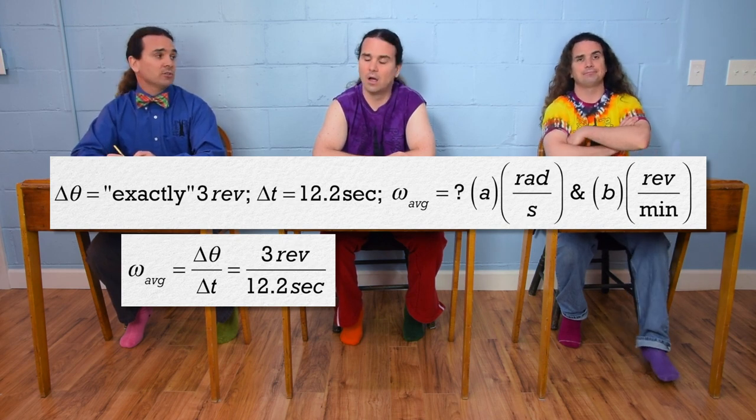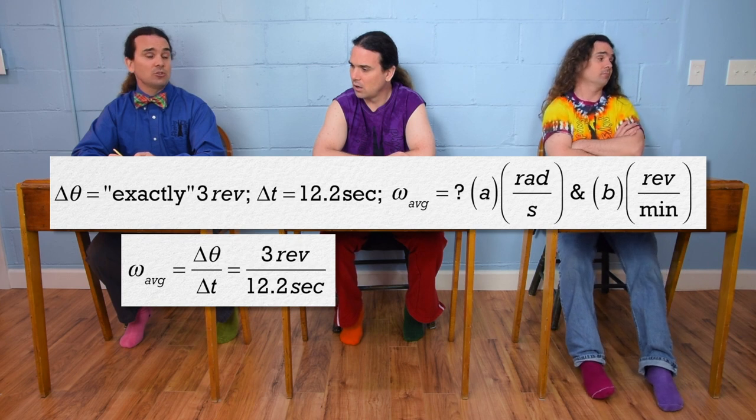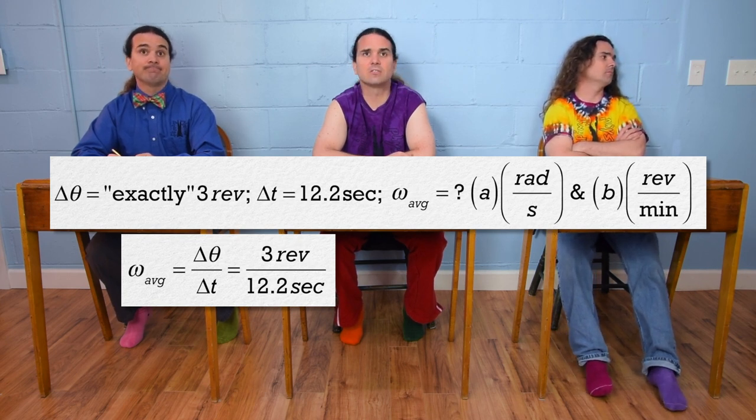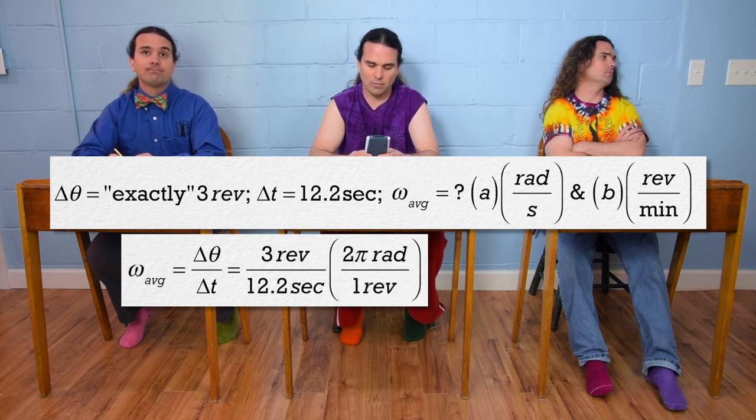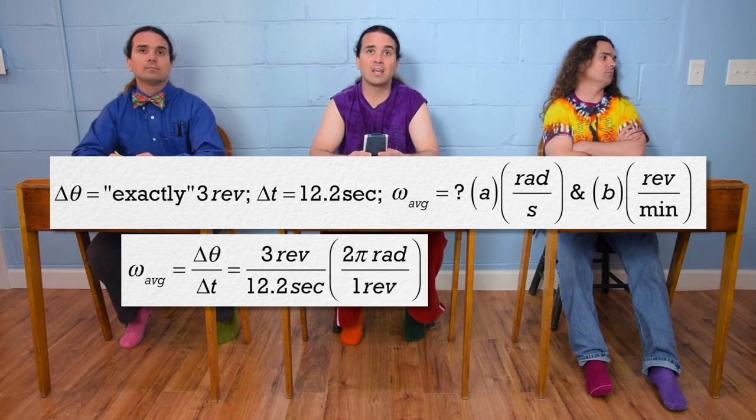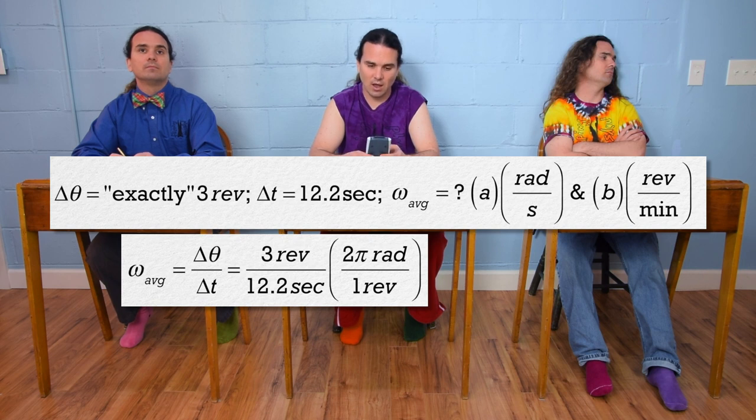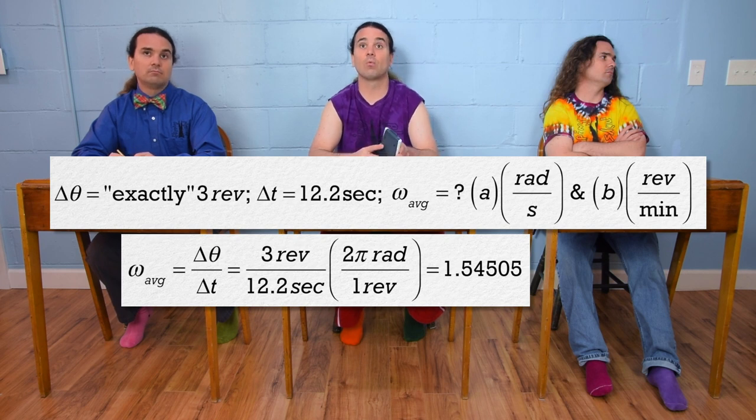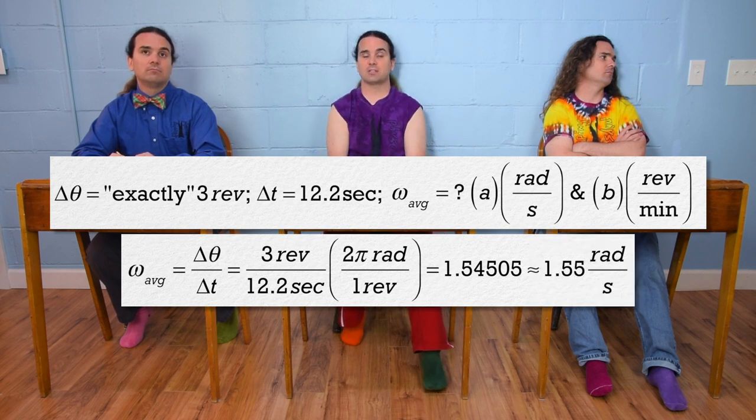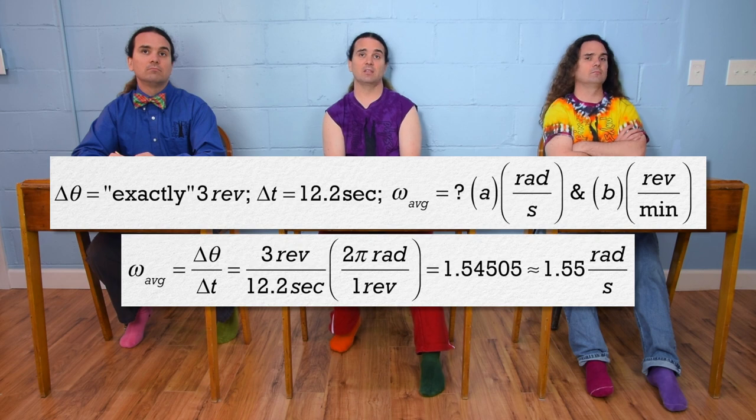One revolution equals 360 degrees equals 2π radians. Right, so multiply by 2π radians over one revolution to cancel out revolutions, and we get 1.54505 or 1.55 radians per second with three significant digits.